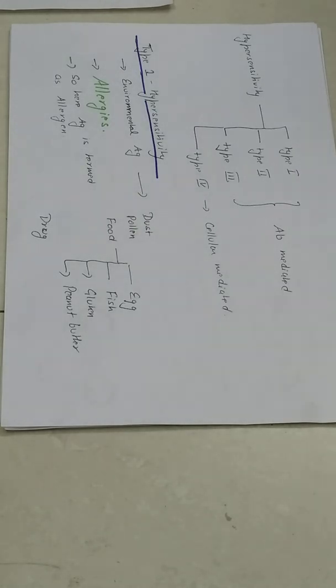If we classify the hypersensitivity, then on the basis of type of cells involved, the hypersensitivity can be divided into four types: Type 1, Type 2, Type 3 and Type 4. The first three are antibody mediated, whereas the Type 4 hypersensitivity reactions are cellular mediated. Here we are going to discuss about Type 1 hypersensitivity.